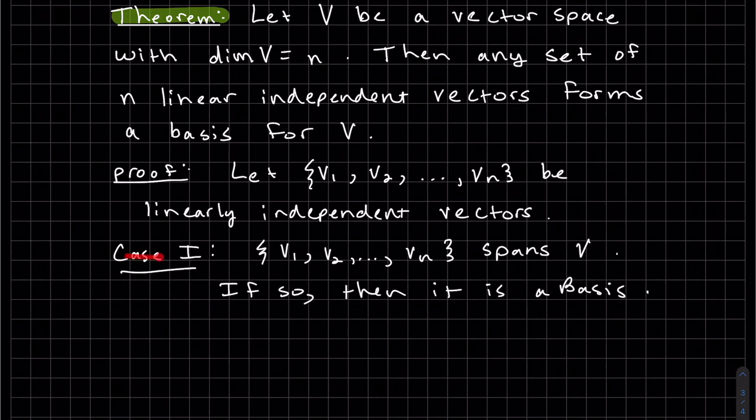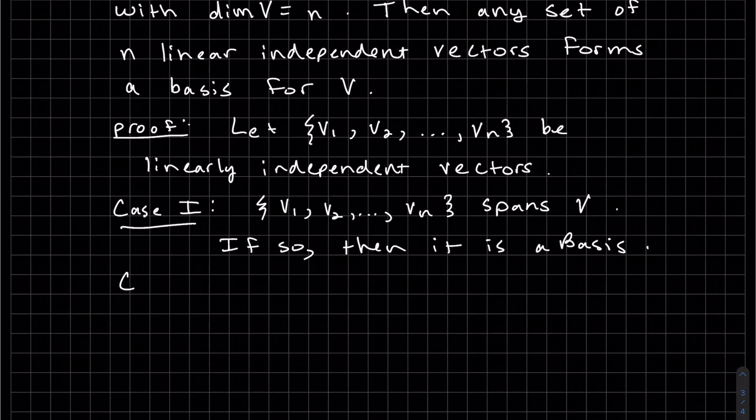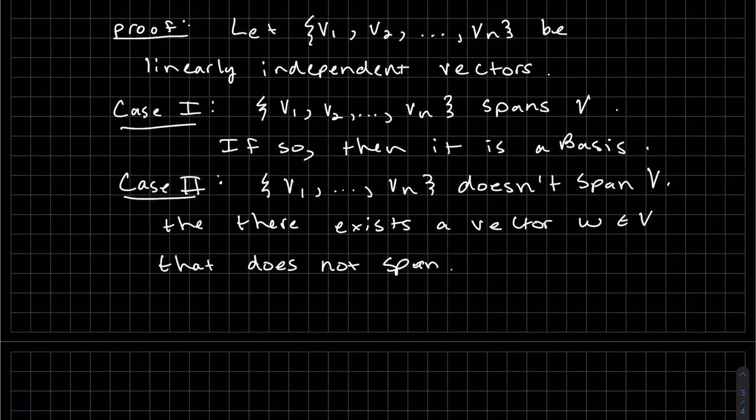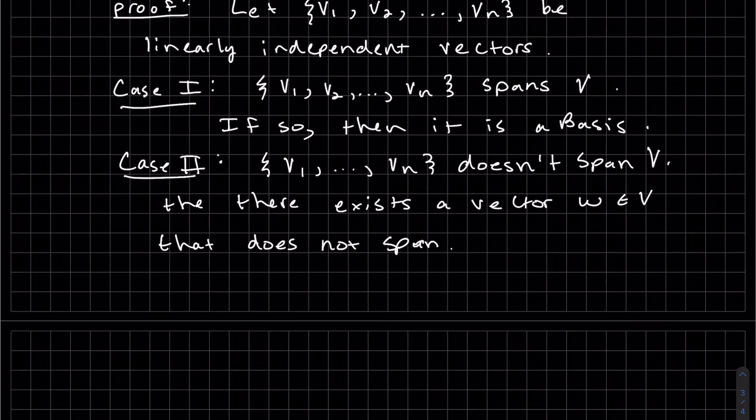Case one, it spans v. Since it's already linearly independent, then it's a basis. Case two, which pretty much I could have just started at case two and called it a proof by contradiction. But this assumption is it doesn't span. If it doesn't span v, then that means there exists a vector w in v that does not span. Let me write that. If that's the case, then we also have the linearly independent theorem that you add w to the set, and it spans.